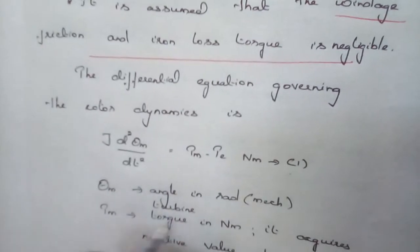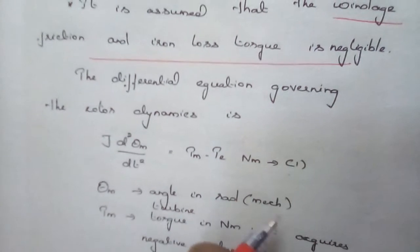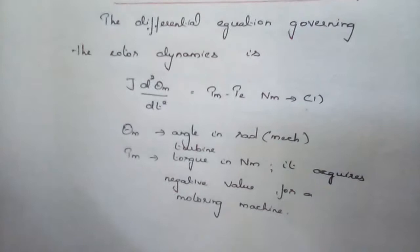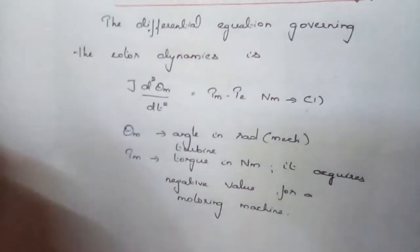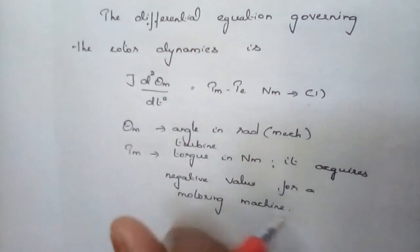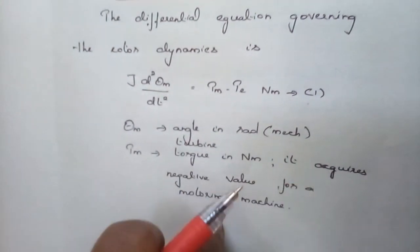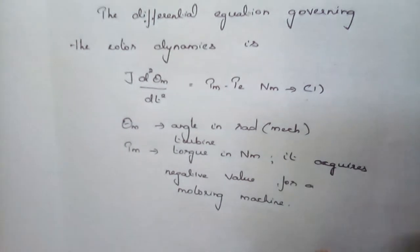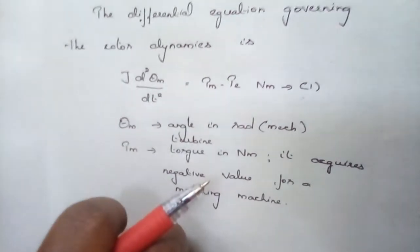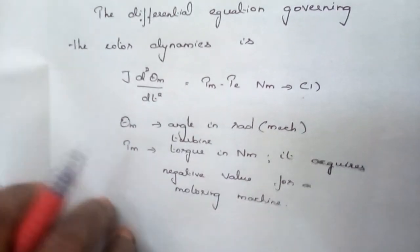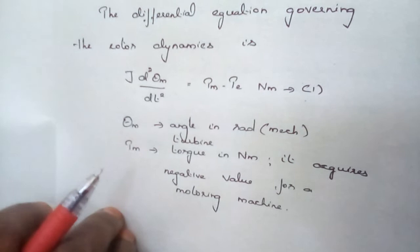Here, θm is the angle in radians, that is in mechanical radians — this is the turbine angle. Tm is the torque in Newton meters. The torque takes a negative value when it is having a motoring action. When it is having generator action, it has a torque of positive.